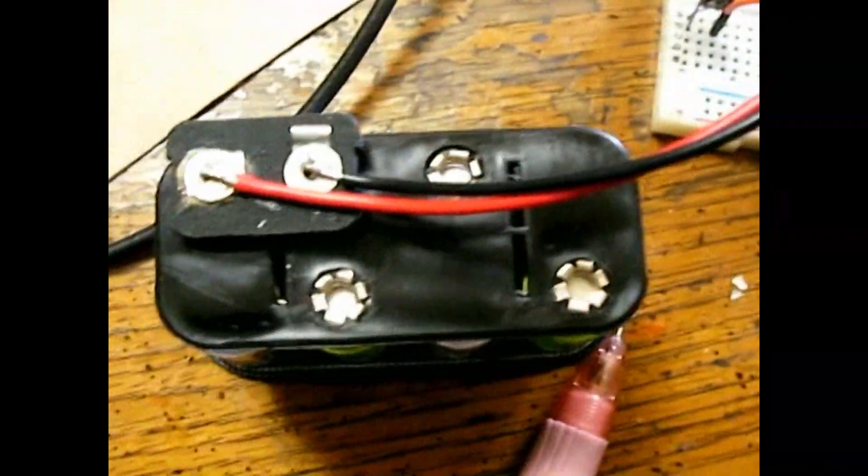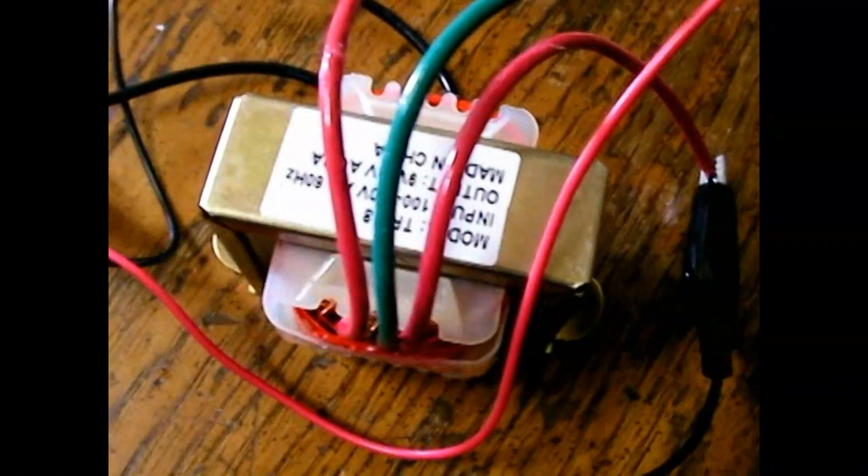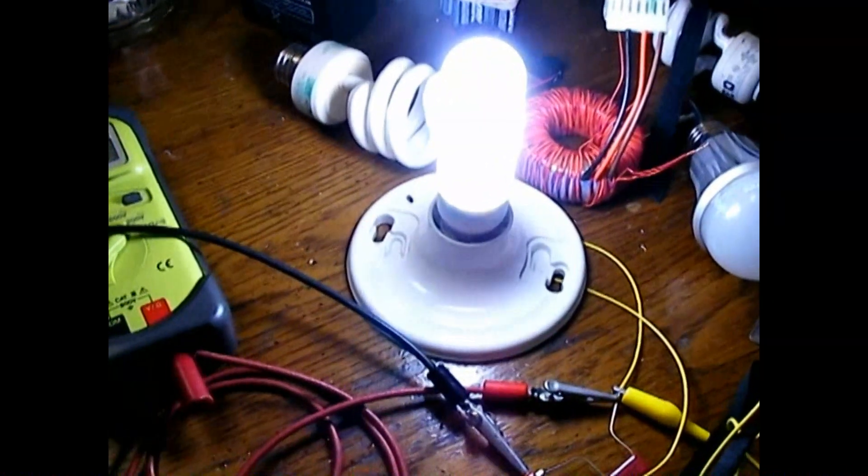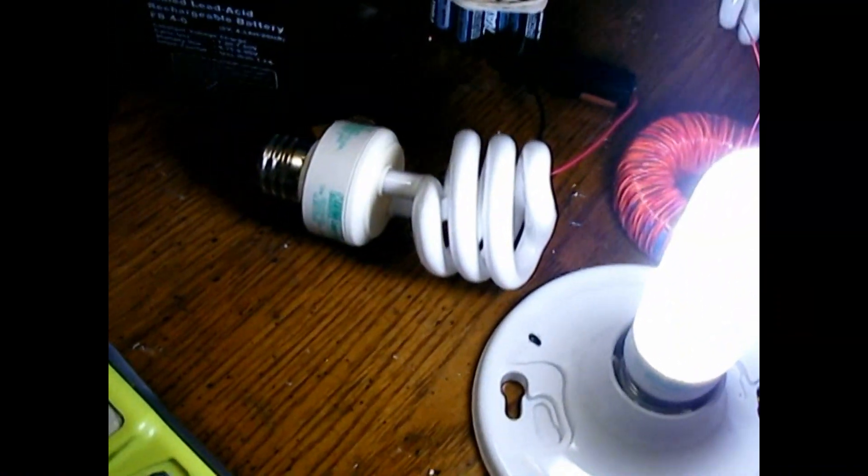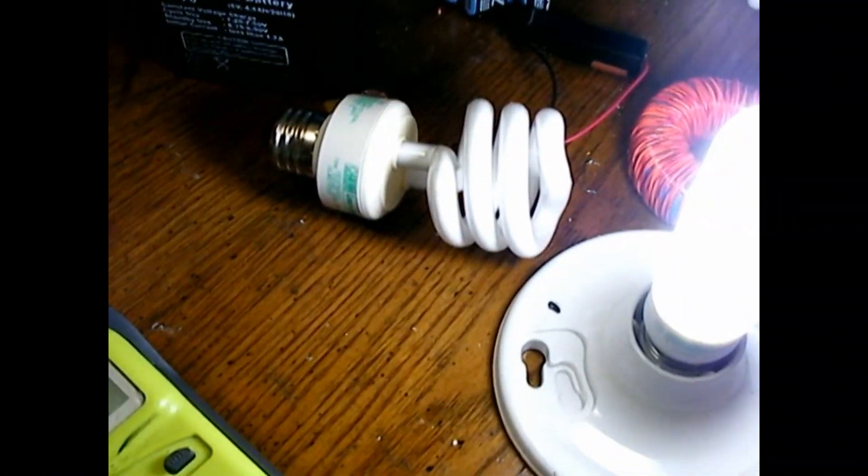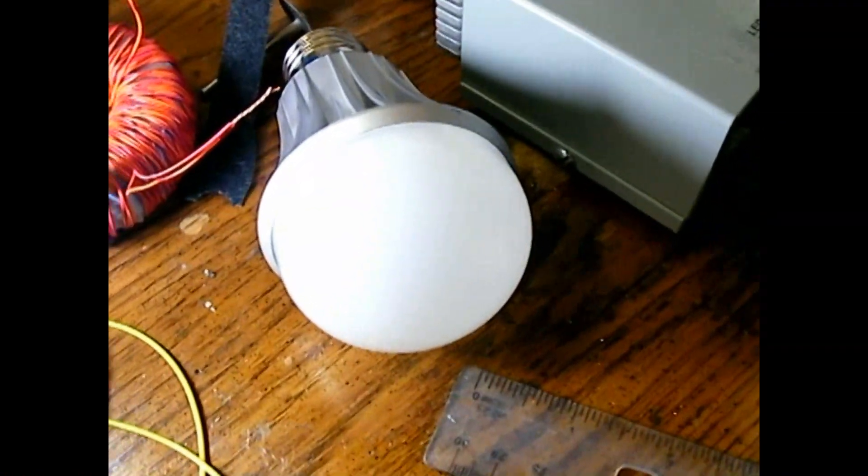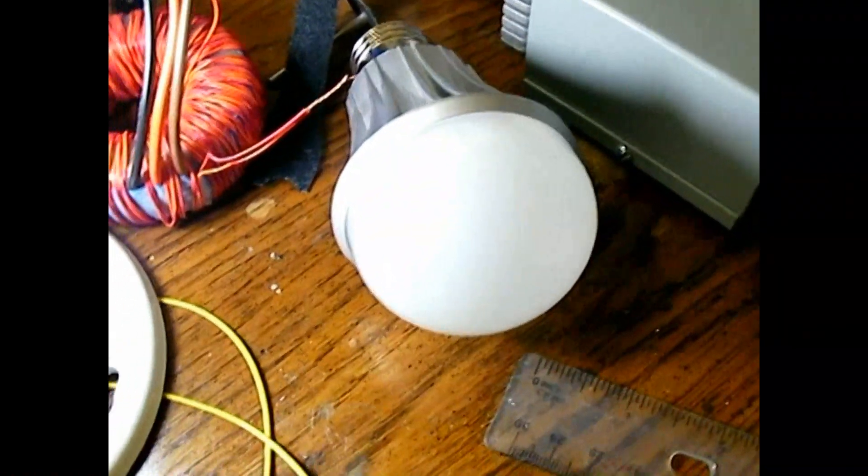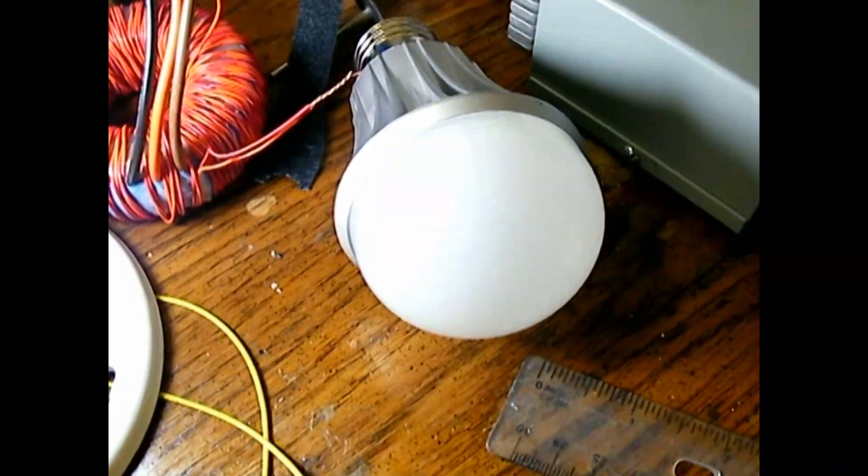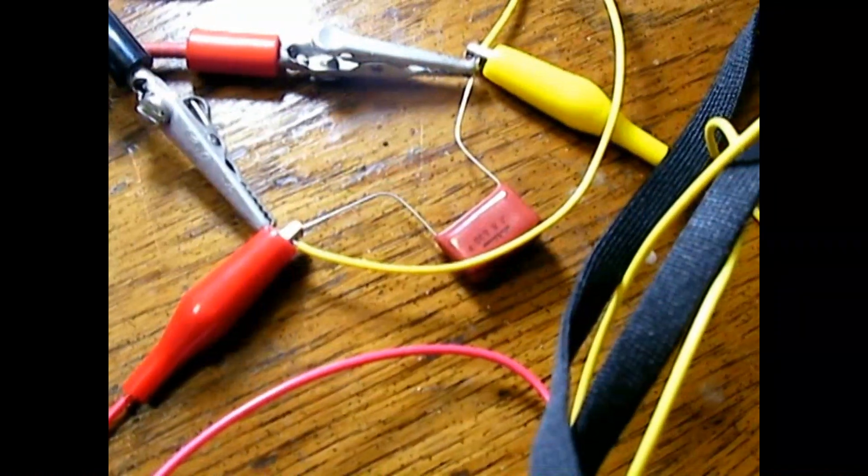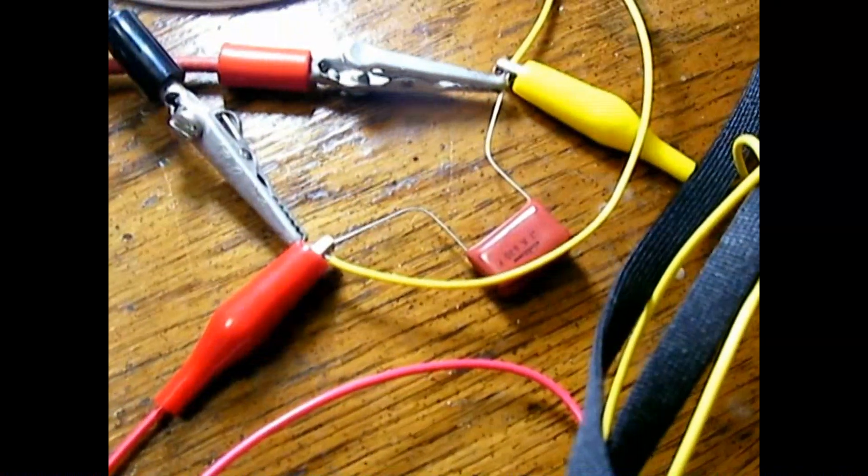This is running off 8 AA batteries. You have the transformer here, and you have this CFL 7.5 watt bulb. It also runs on the 18 watt CFL over here at about 90 to 95 percent brightness on the utility tech bulb. So it's still in the testing stage. There's a mylar capacitor there.